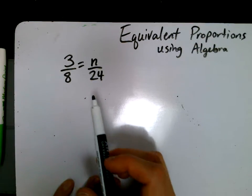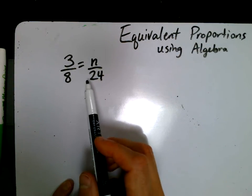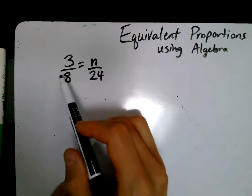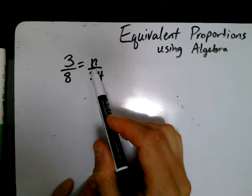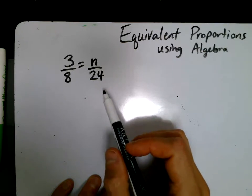Okay, let's look at a way we could solve an equivalent proportion or equivalent fractions using algebra. So here's a proportion, and here is an equivalent proportion expressed differently. And we are trying to figure out what the numerator n is here.